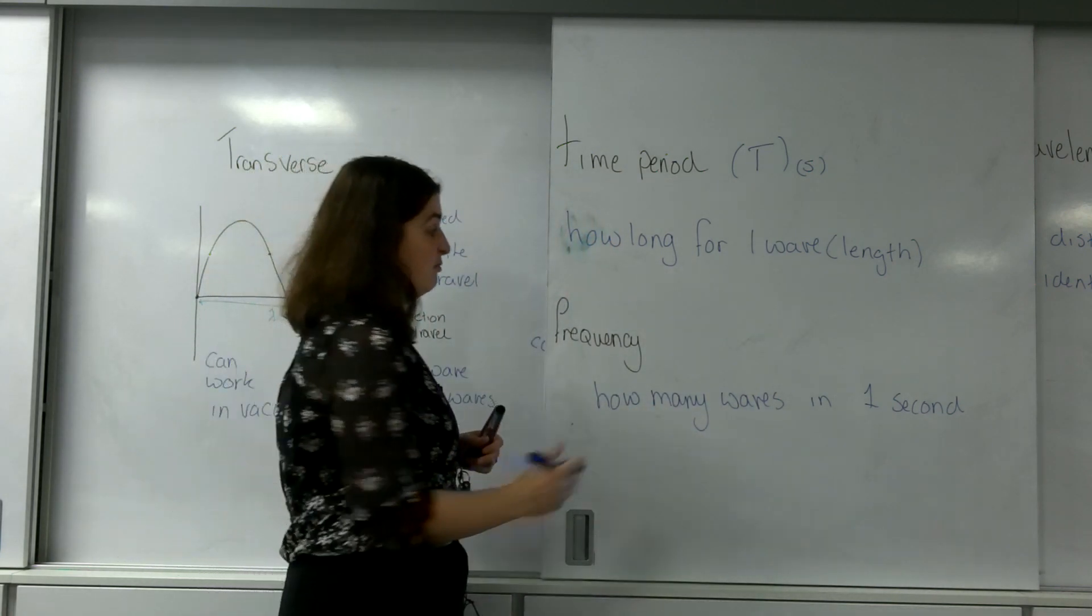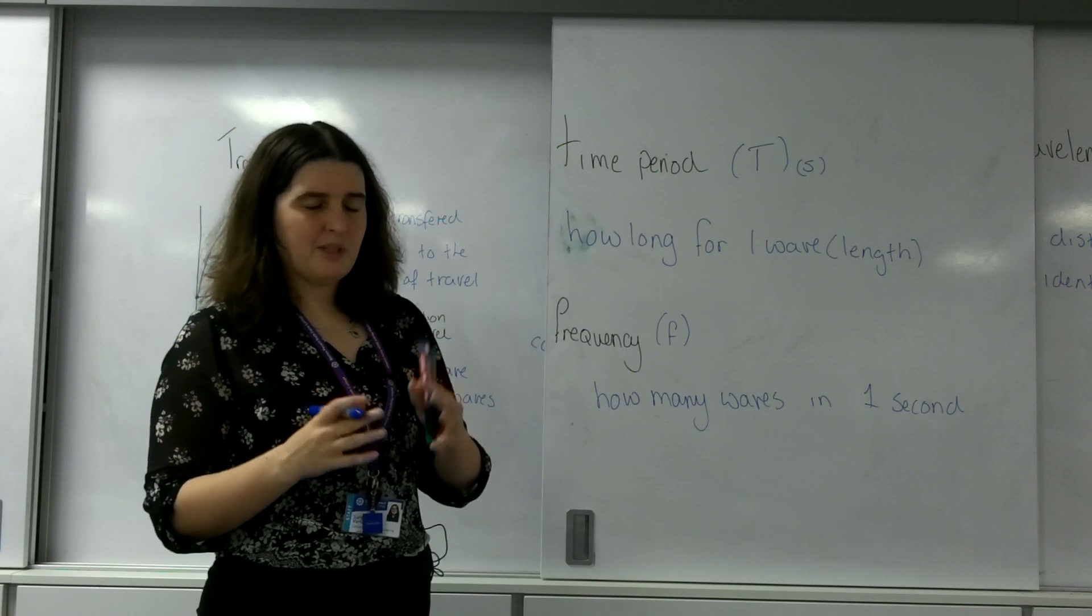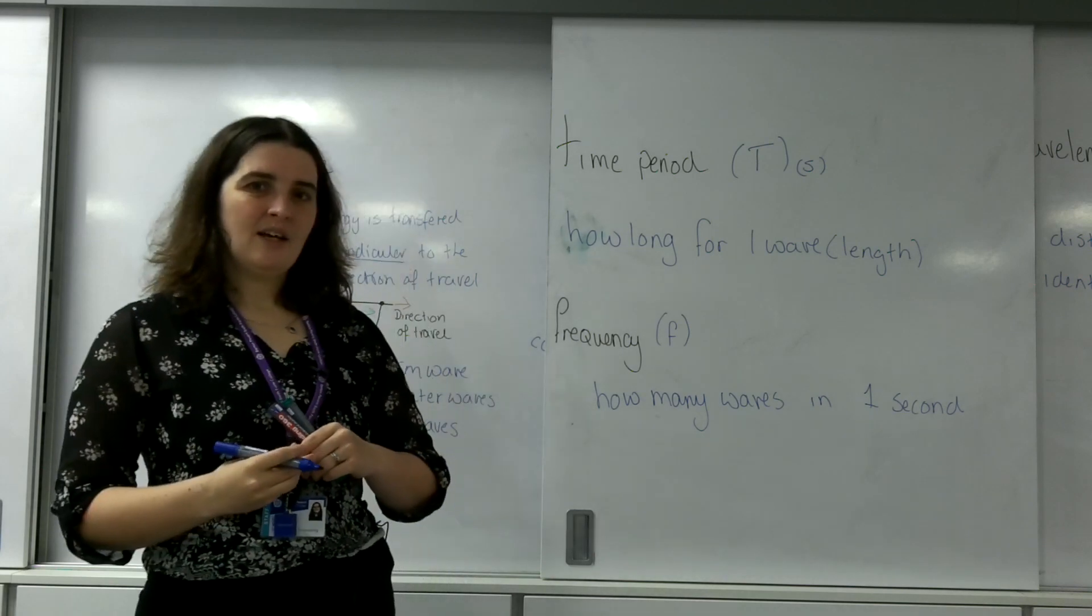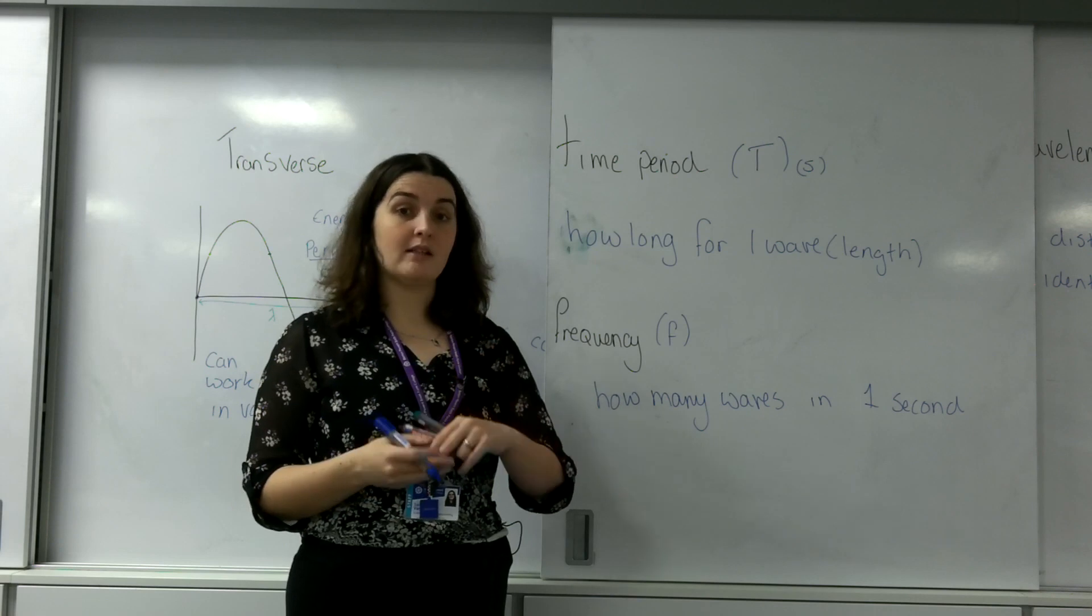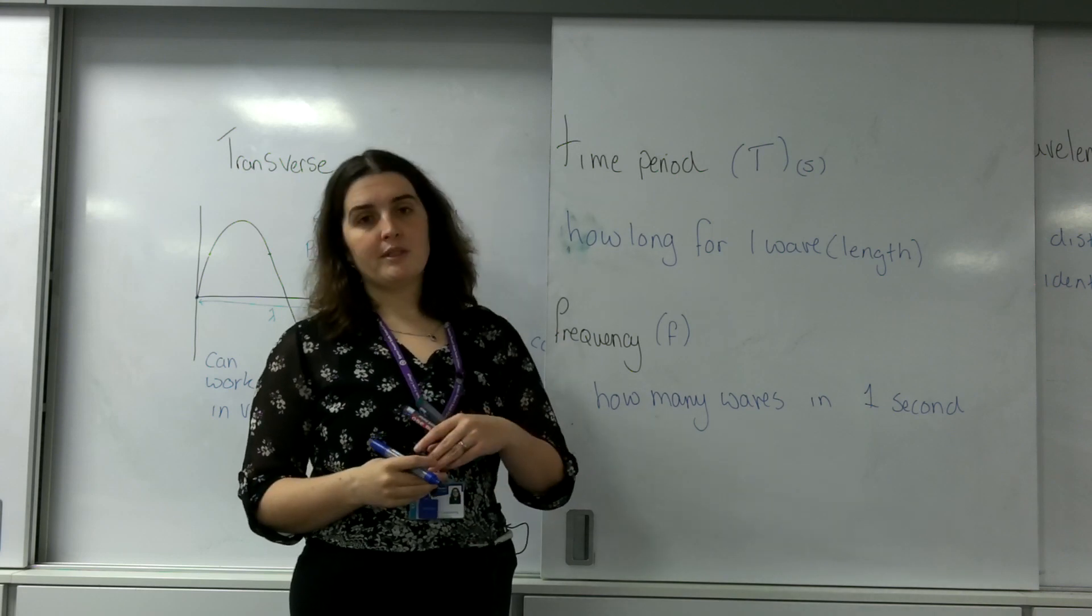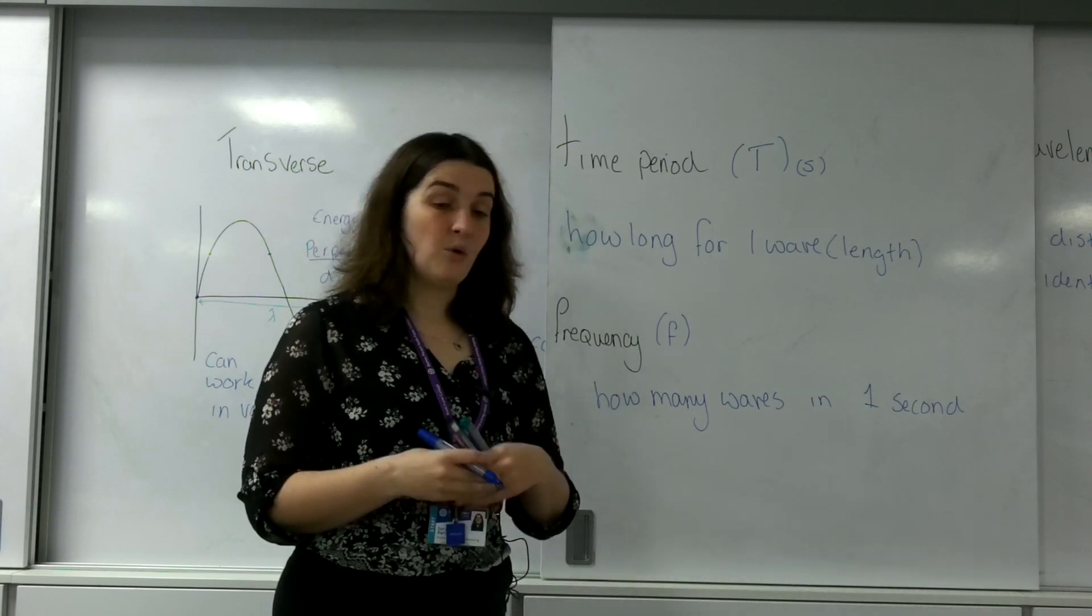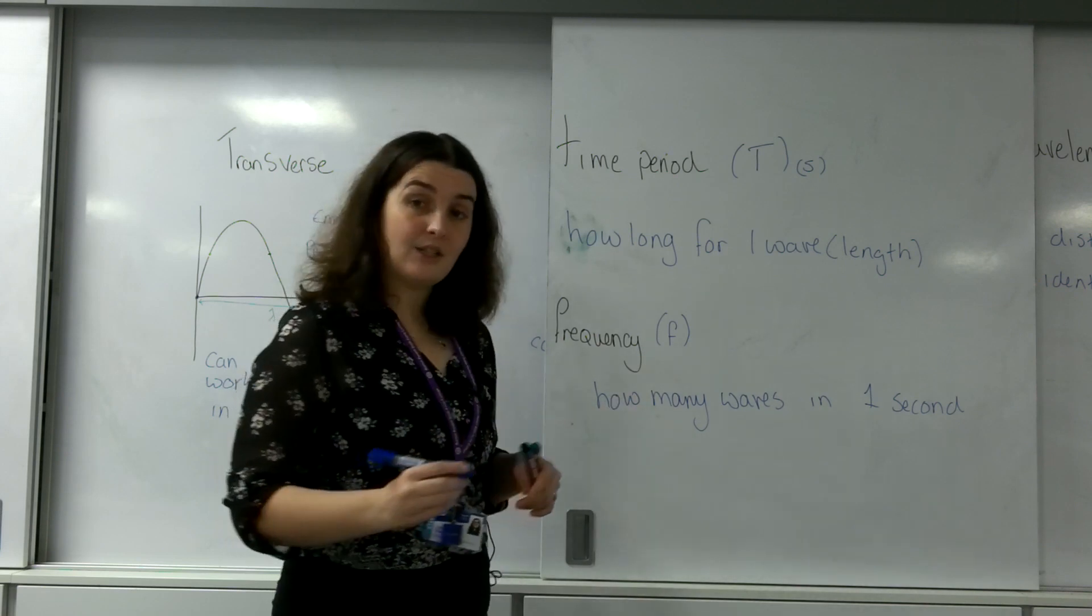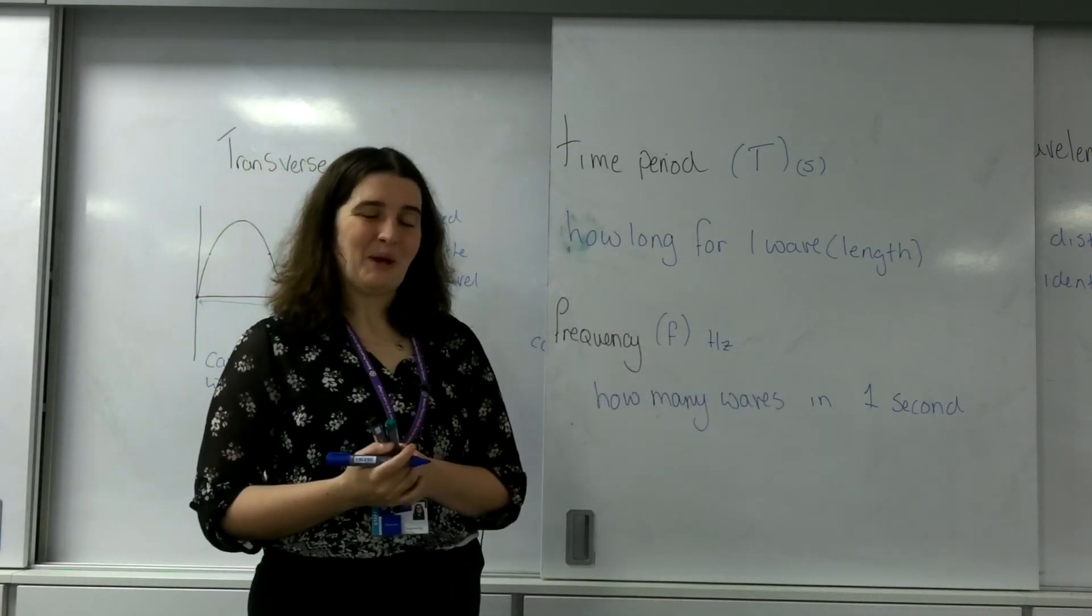Frequency, or F, is something very similar but altogether very different. It's how many waves I get in one second. If I get a full wave in one second, my frequency is one. If I get ten waves in one second, my frequency is ten. If I get 0.1 of a wave in a second, that is 0.1. We measure frequency in the unit of hertz, or Hz.